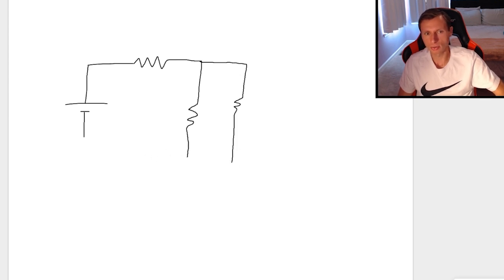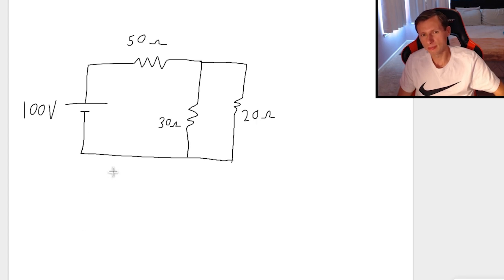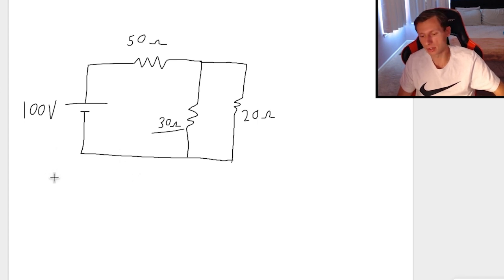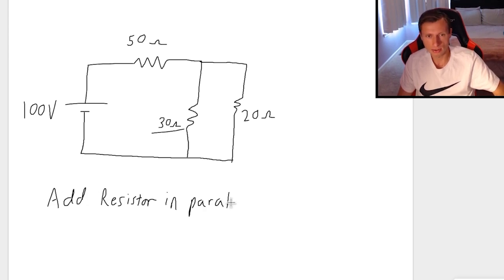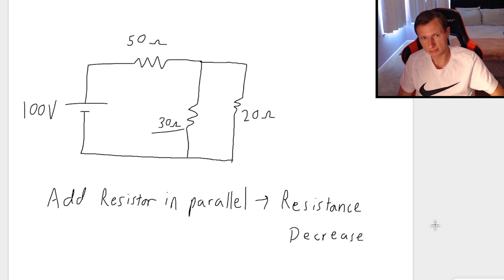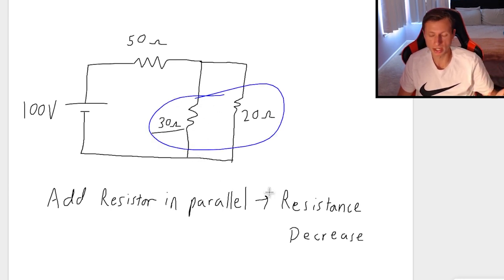As promised, there is a shortcut method, though I do not recommend it because it takes years of practice. The shortcut goes like this: when I add a 30 ohm resistor in parallel, what happens to the total resistance? Your first inclination is to say resistance goes up because I added a resistor — but no. When you add a resistor in parallel, the resistance will always decrease. So the total resistance of that part goes down from 20 to 12 ohms, which then decreases the entire circuit resistance.